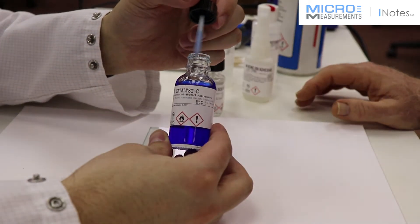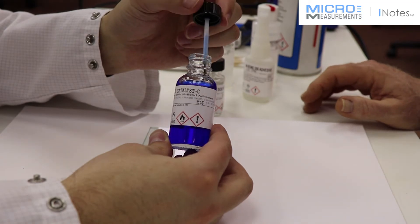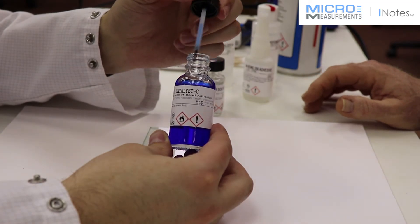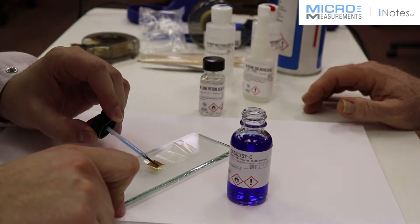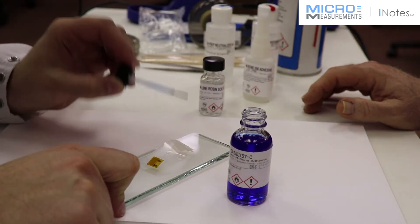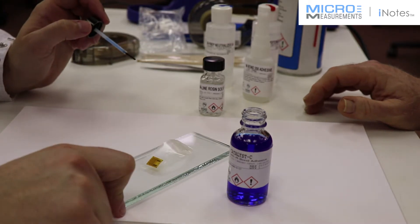Too much catalyst C could be a contaminant and cause the gauge not to bond properly. He's then going to use a squeegee motion, the side of the bristles of the brush and put a single coating of the catalyst C and allow that to air dry.